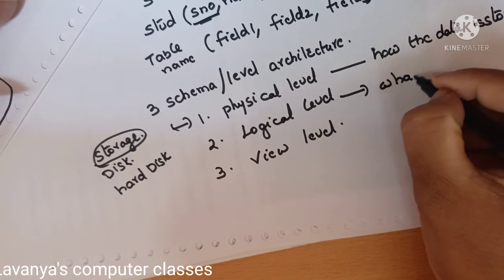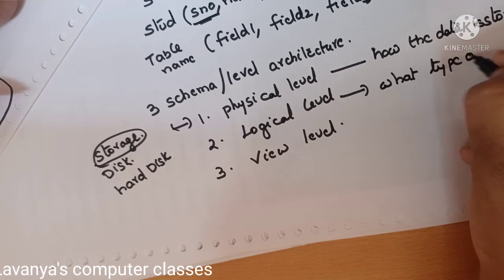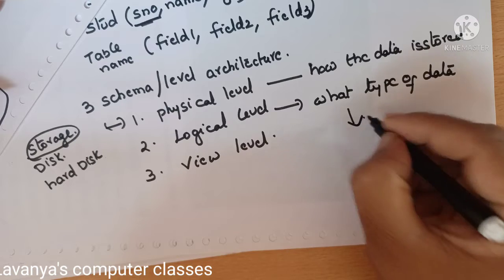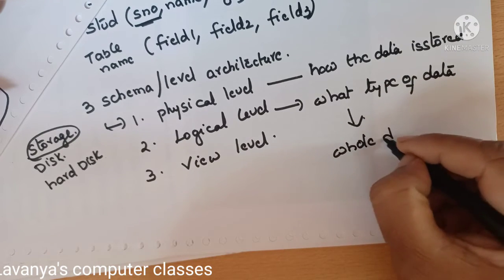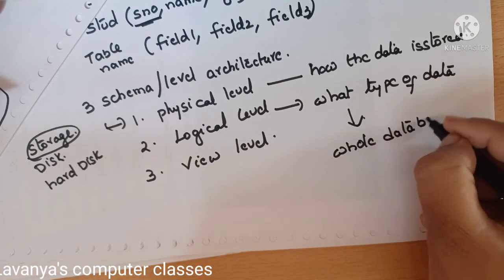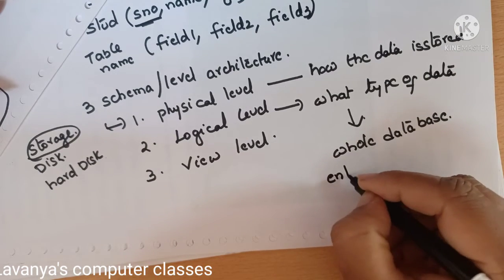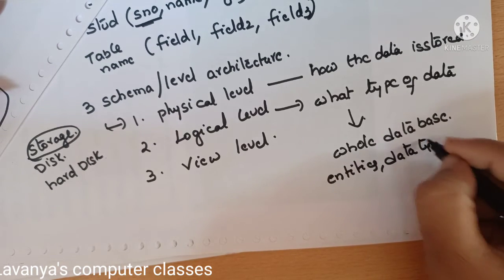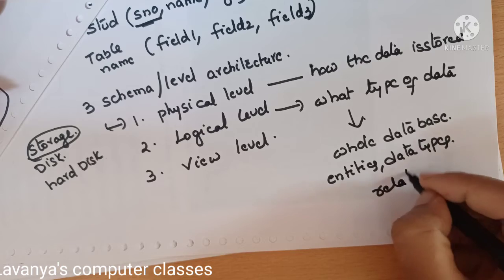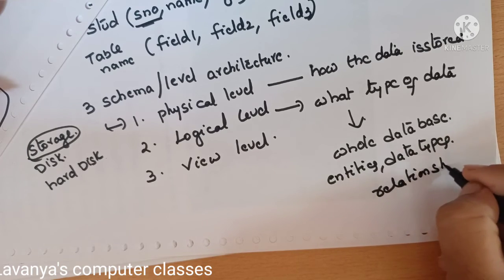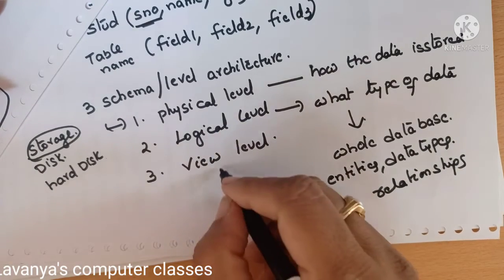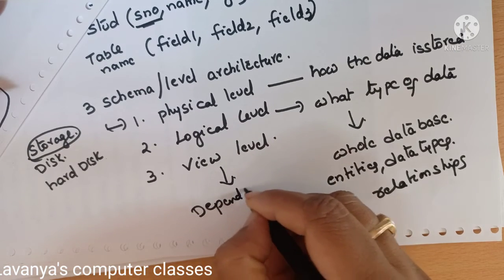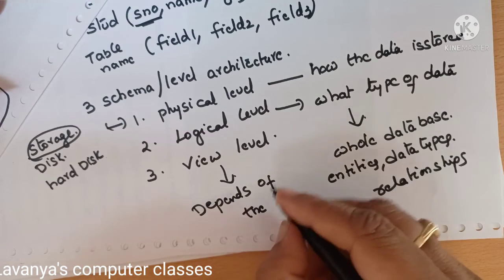The second one is logical level, also known as conceptual level. It explains the structure of the whole database — what fields are there, what entities are there, what the data types are, and the relationships between entities or fields. Key constraints, primary key constraints — everything is explained in the conceptual level. The third is view level, also known as the user's level or external level. Depending upon the user's requirements, they will see the information — that is why there are multiple view levels.